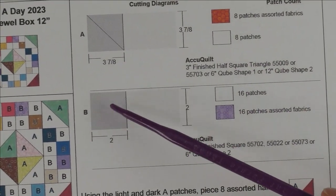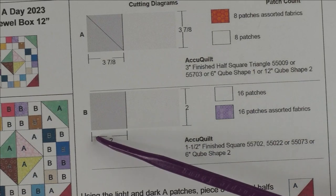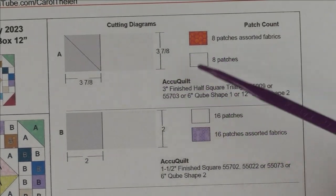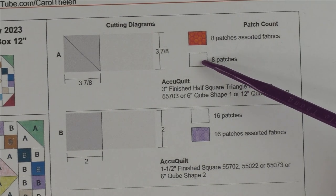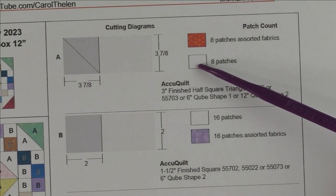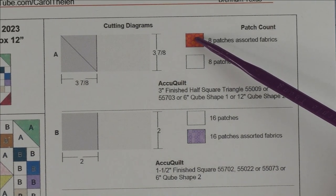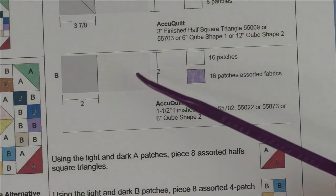The squares finish at one and a half inches, they're cut two inches. For the half square triangles you'll need eight patches of the background and eight assorted patches for the accent fabric. For the squares you'll need 16 of the light and 16 of the assorted.